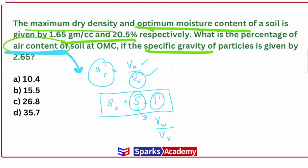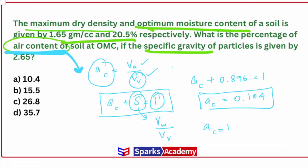Now applying the relationship AC + S = 1: AC + 0.896 = 1, so AC = 0.104. Converting to percentage, the air content AC = 10.4%.